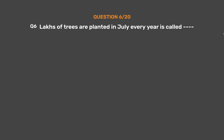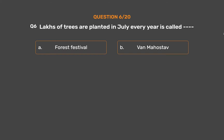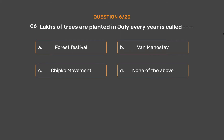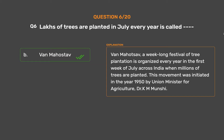Question number 6: Lakhs of trees are planted in July every year — this is called. Option A: Forest festival. Option B: Vanmahotsav. Option C: Chipko movement. Option D: None of the above. The correct answer is Option B: Vanmahotsav. Vanmahotsav is a week-long festival of tree plantation organized every year in the first week of July across India, when millions of trees are planted. This movement was initiated in the year 1950 by Union Minister for Agriculture, Dr. K. M. Munshi.